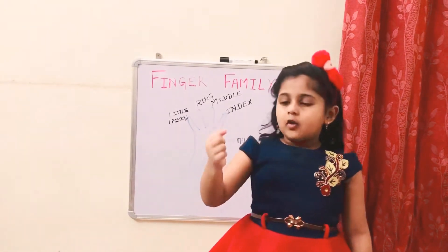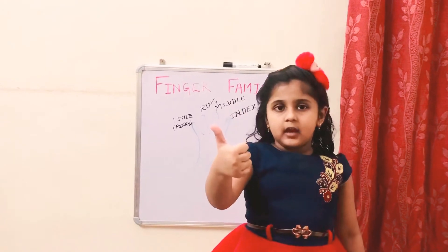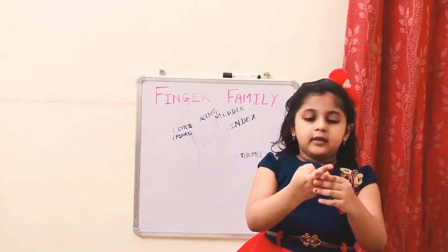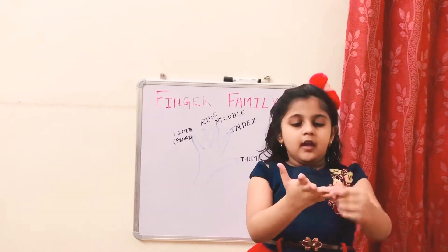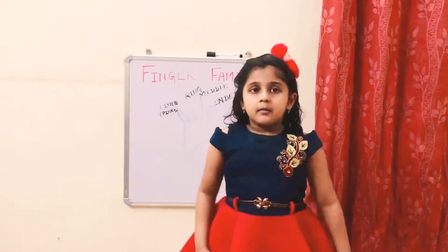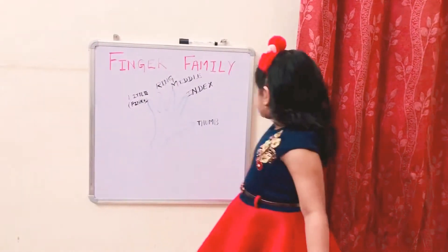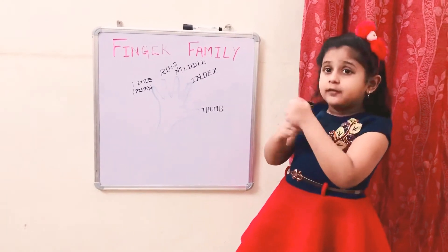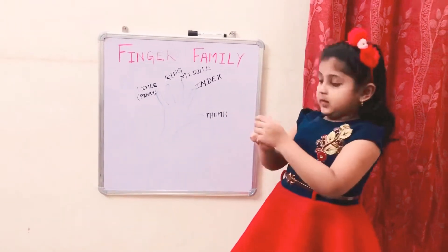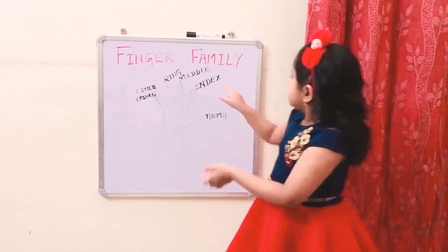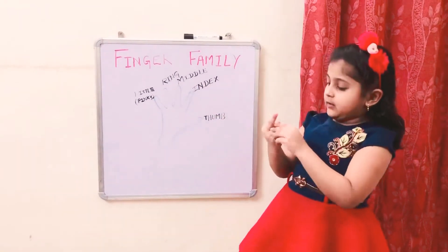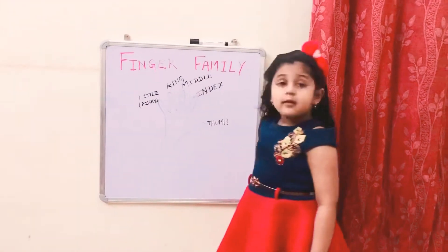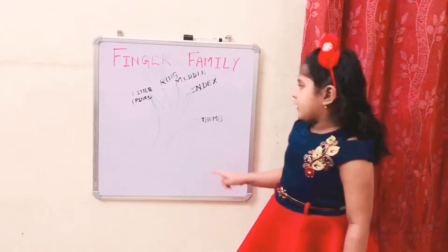Babies call them Daddy finger, Mommy finger, Brother finger, Sister finger, Baby finger. We have actual names: thumb, index finger, middle finger, ring finger, and little finger. We can also call it Pinky.